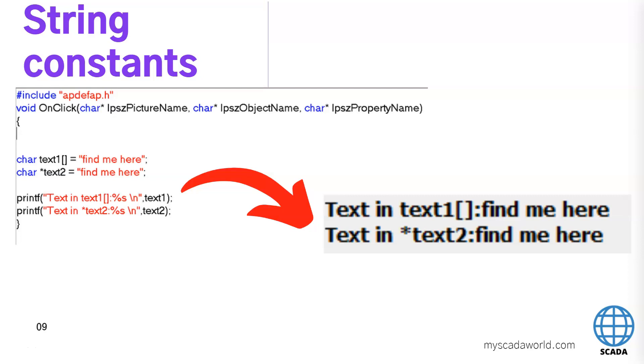I can also declare some string constants. As you see, my char text one with brackets. The same I can make with the second option, text two, but this time I have a pointer to my text and I can put also the find me here. After I printf this option - we will talk about printf options later. I used the printf option and I displayed inside our WinCC runtime the values. On the right side, you see the text in text one was find me here, and text in pointer text two was also find me here.